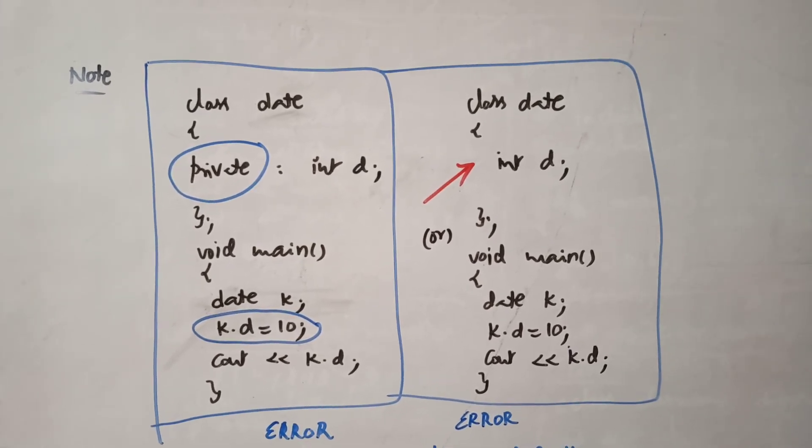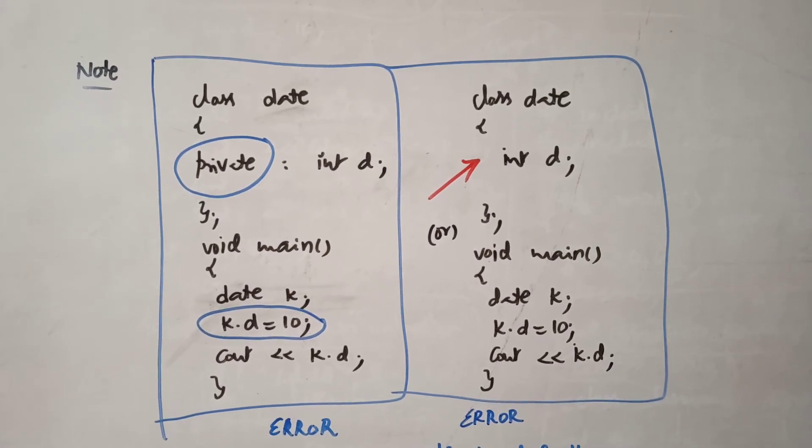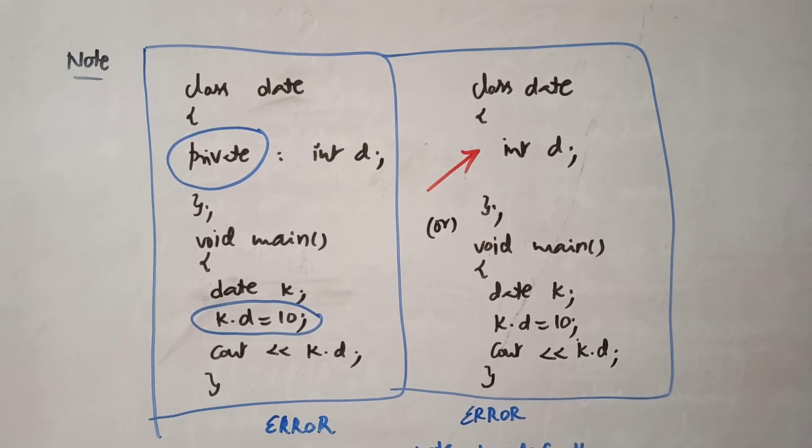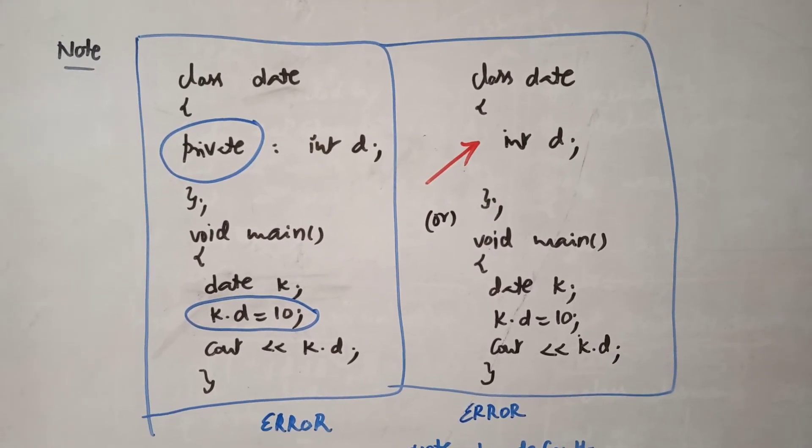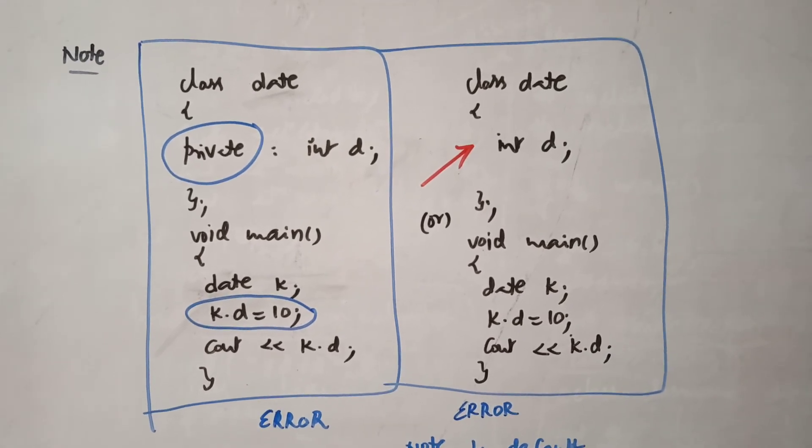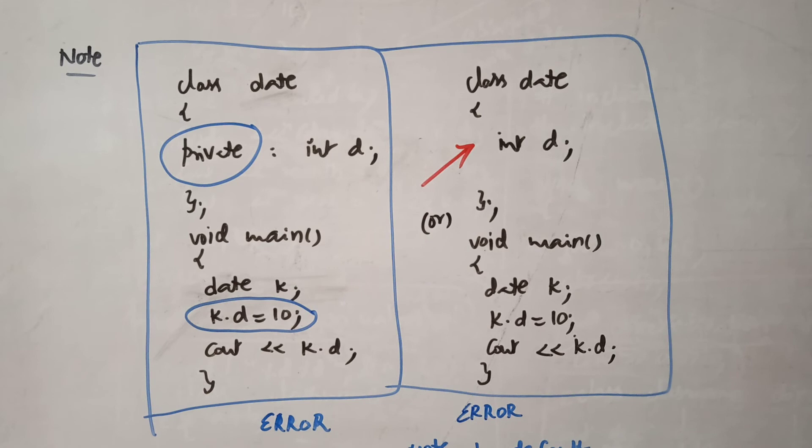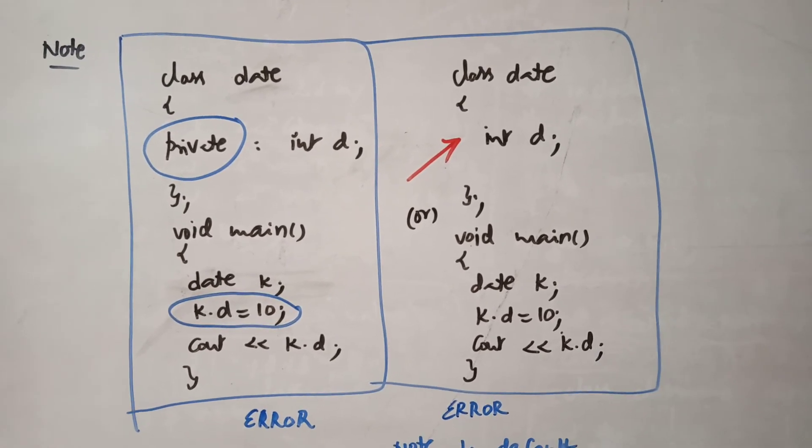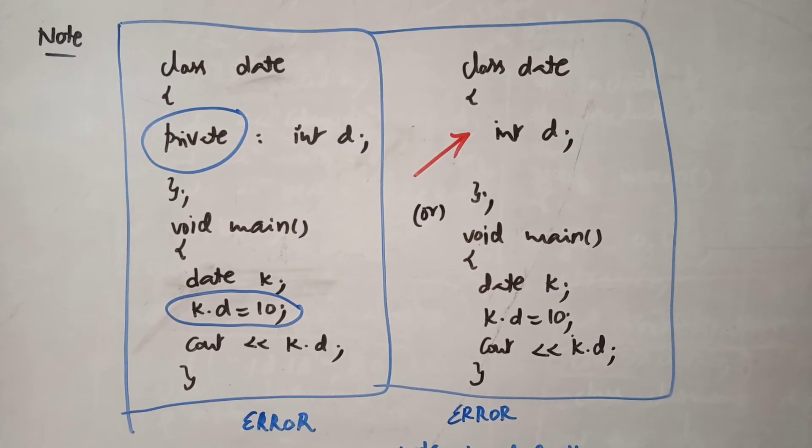So what happens if you try to access the data which is private? Look at a demo program. A small program. The class name is date here, and data is D. Here also the class definition is outside the main. I told you class definition can be inside or outside. In session 2 we used class definition inside main. No confusion regarding these type of things. And the object is K. K dot D is equal to 10 which is an error.